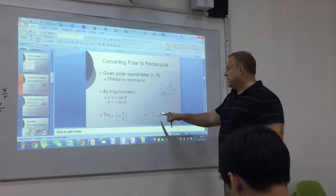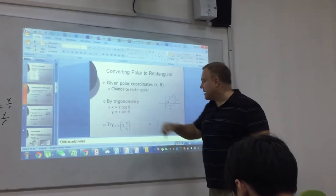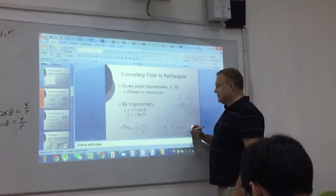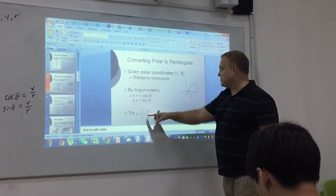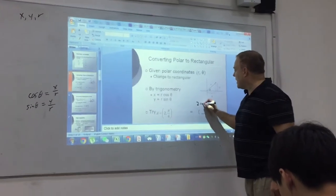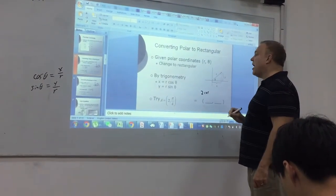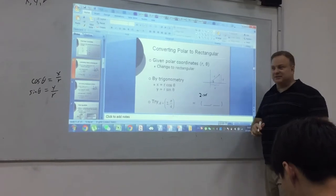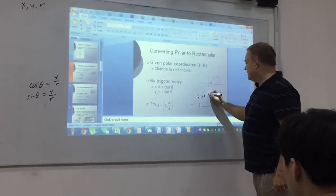Okay, well no problem. X is R cosine theta. So what's R? Two. For this point, right? Two times cosine of, what is theta? Pi over four.